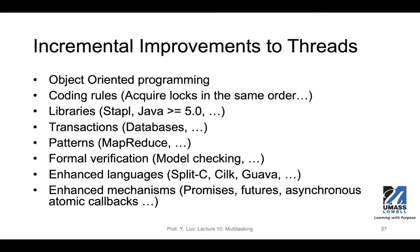There are incremental improvements throughout the years. Here's just a short list of those: you can use objects to encapsulate the data accesses; you can enforce coding rules, acquiring locks in the same order and releasing them subsequently; you can use transactions for databases to ensure atomic operations; you can use MapReduce to divide the bigger problem into smaller ones and aggregate the results; you can use formal verification to do model checking to prove your program will behave correctly. There are a lot of different things that people have been trying to resolve the problem or address the challenges in designing multi-threaded programs.